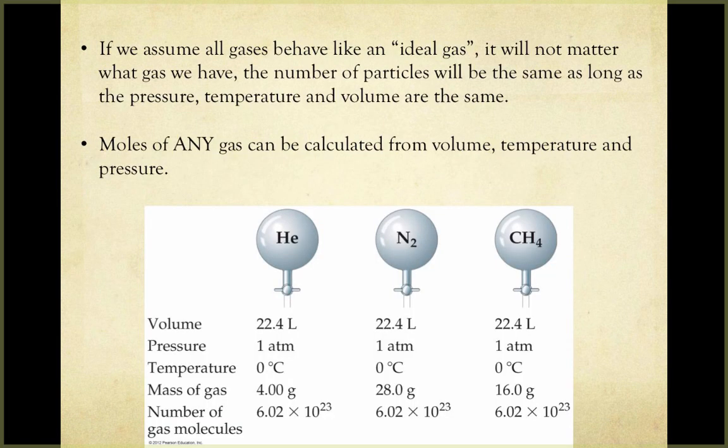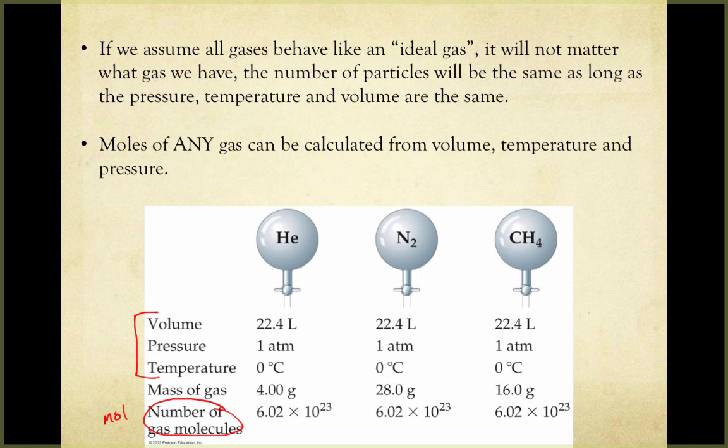Consider the math in PV = nRT: at no point do we take mass or identity of the gas into consideration — only pressure, volume, temperature, and moles. If volume, pressure, and temperature are all the same, we'll always get the same number of gas molecules or the same number of moles of gas, even though the masses will be different because each individual particle has a different mass.